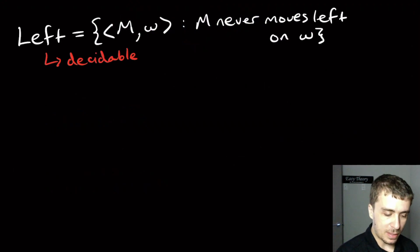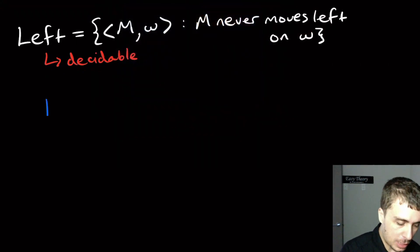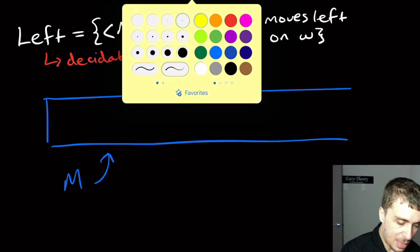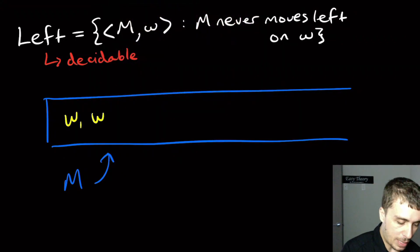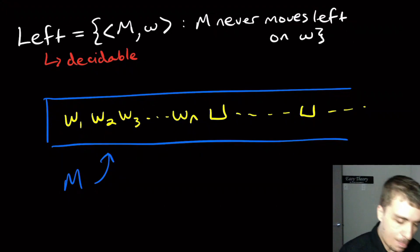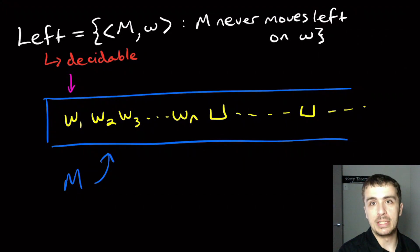To prove LEFT is decidable, let's visualize what this Turing machine M actually does. We have input W — W1, W2, W3 up to WN — with blanks after it. At the very beginning we're positioned at the first cell, and then we move in some direction. On the first transition, if we try to move left, that's immediately a problem.